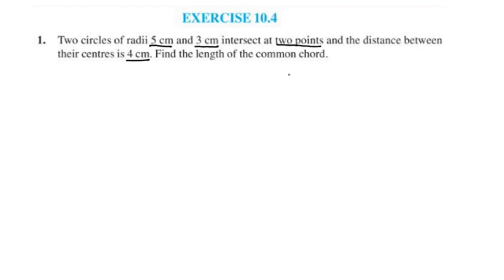Find the length of the common chord. Two circles of radii 5 cm and 3 cm intersect at 2 points. There is a common chord — there is a line that intersects at those 2 points.